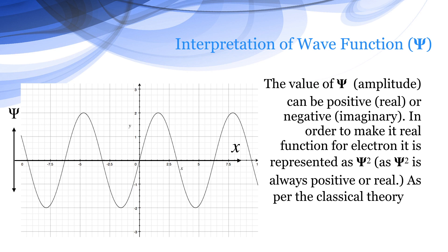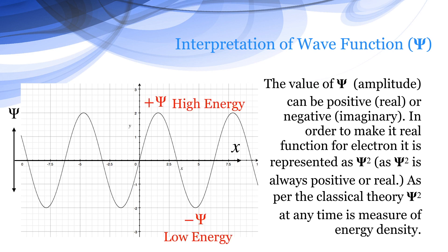As per classical theory, Ψ² at any time is a measure of energy density. That is, if it has a positive value, it is high energy, and if it is a negative value, it is low energy.